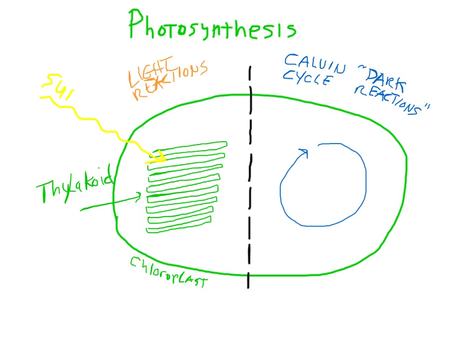This is what makes plants so unique — they can capture energy from the sun. Along with water as a second input. Plants produce oxygen gas as an output. Fortunately for us animals on the planet, we have plants.